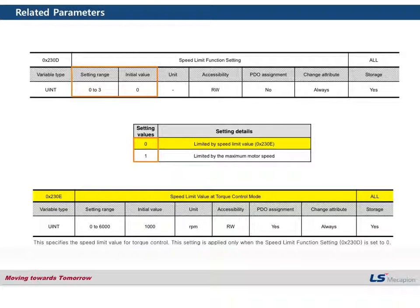Before we check the example for torque control, I'd like to inform you about two parameters that limit speed, because in torque control mode the speed limit is very important and necessary. Parameter 230D is to determine the way of speed limit. The first way is to limit speed by setting the value in parameter 230E.